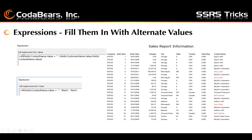So here you can see the expression used for the alternate values. If the contact name is empty, then use the customer name, otherwise use the contact name. And here's the expression on the text box: if the contact name is blank, then show the font in black, otherwise in red.